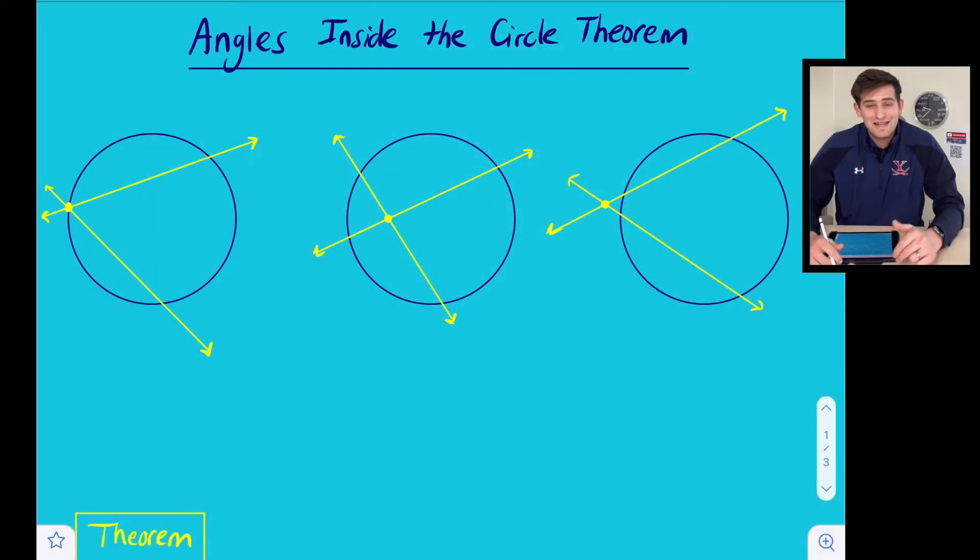Hello everyone, in this video we're going to talk about angles inside the circle theorem. When we think about two non-parallel lines intersecting a circle, there's really three ways that this could take place.